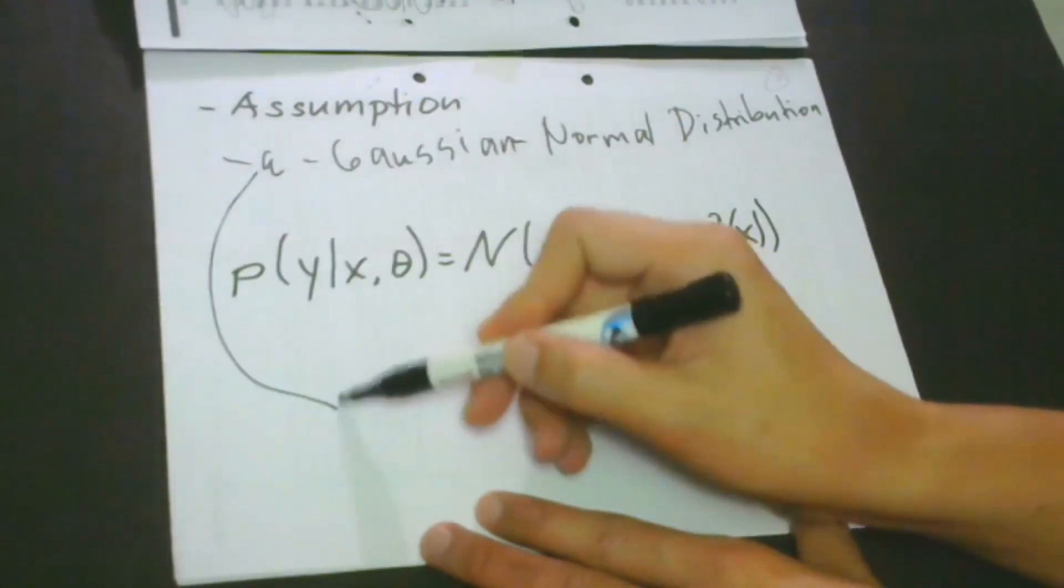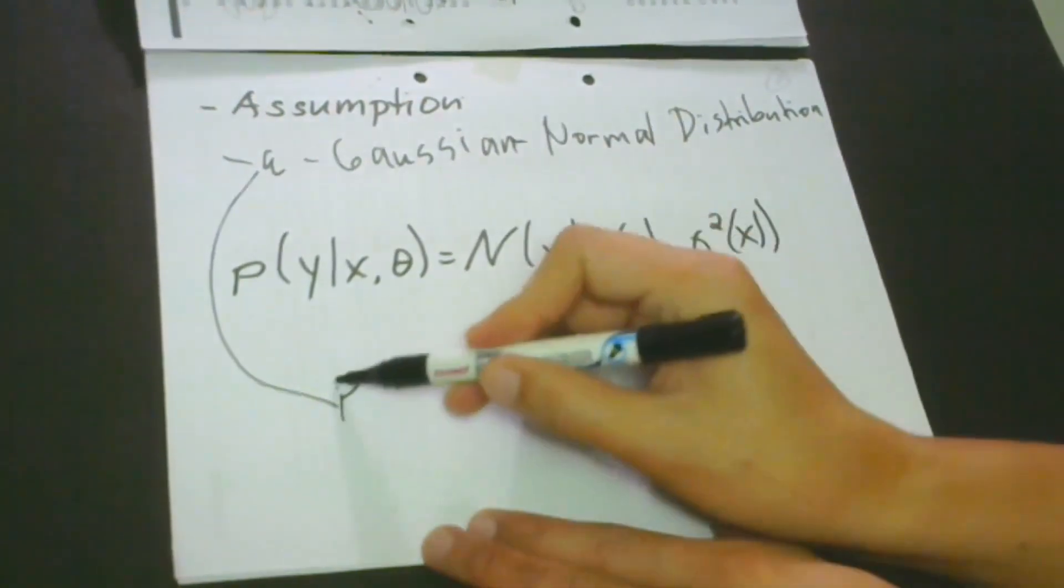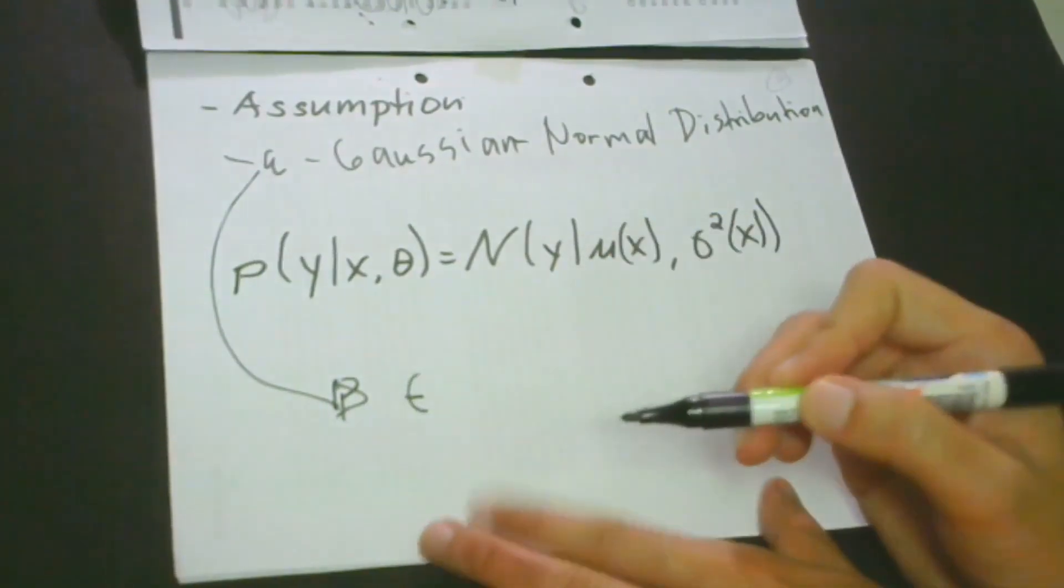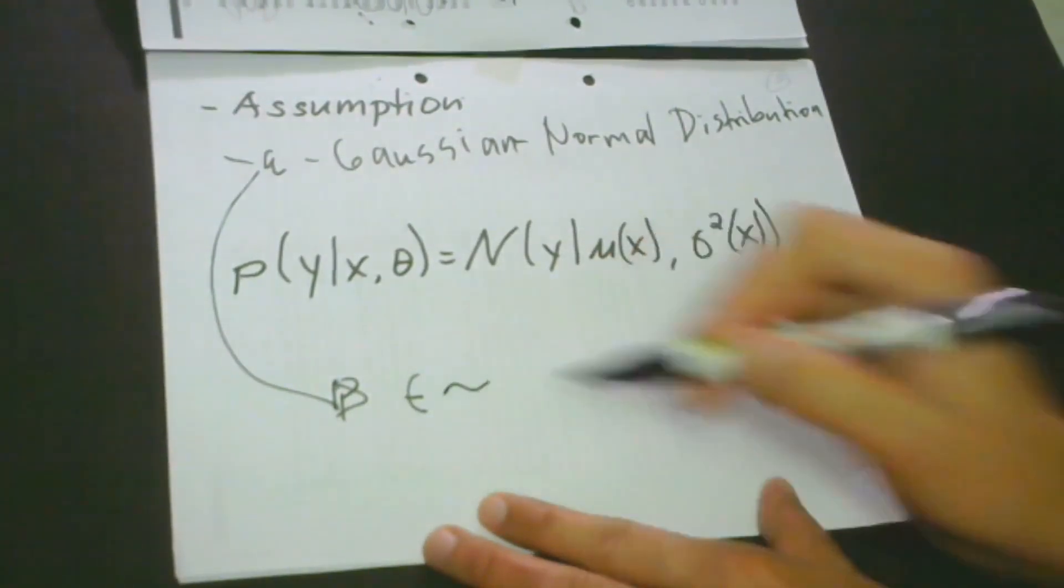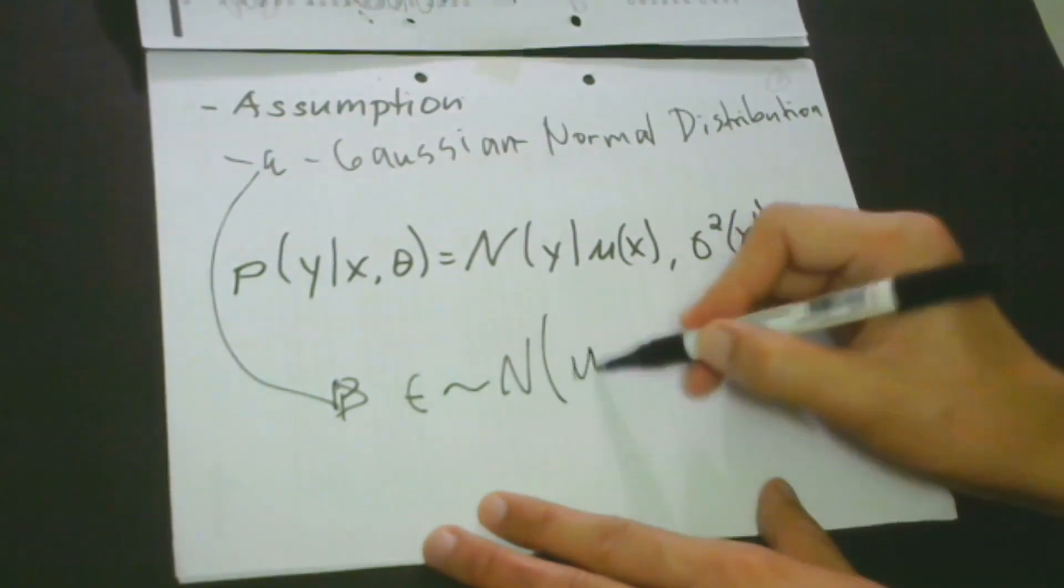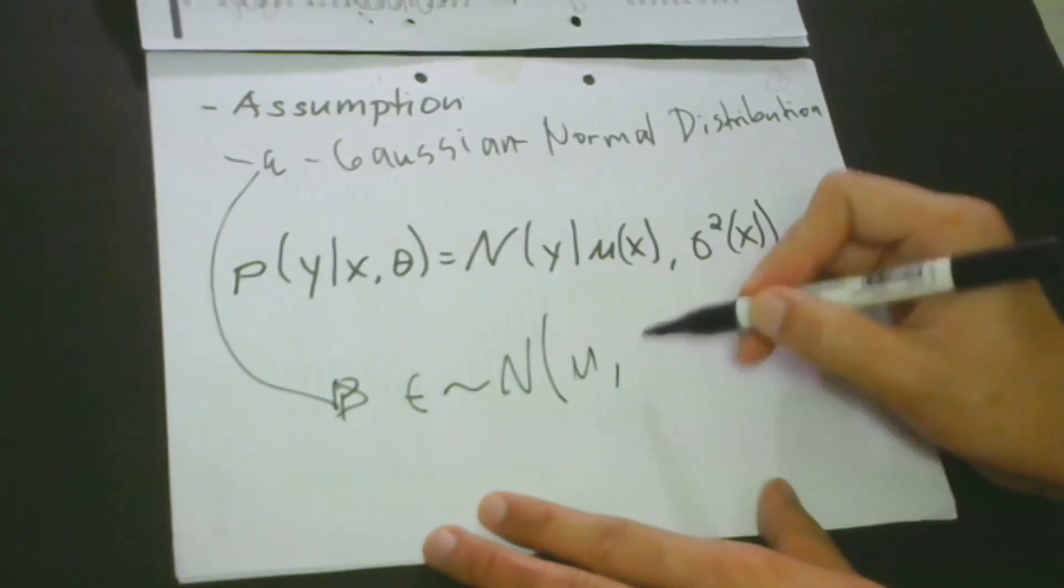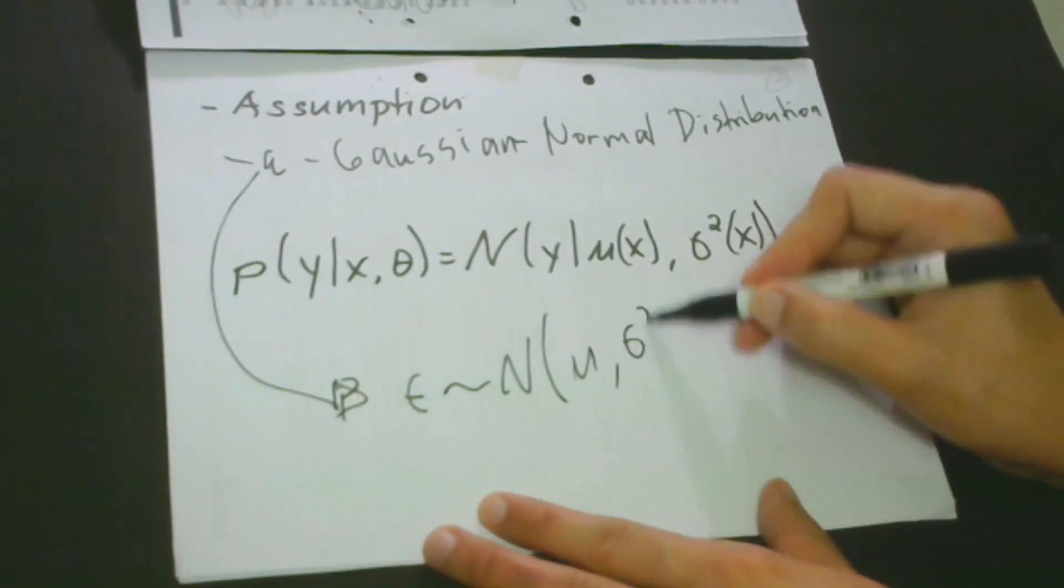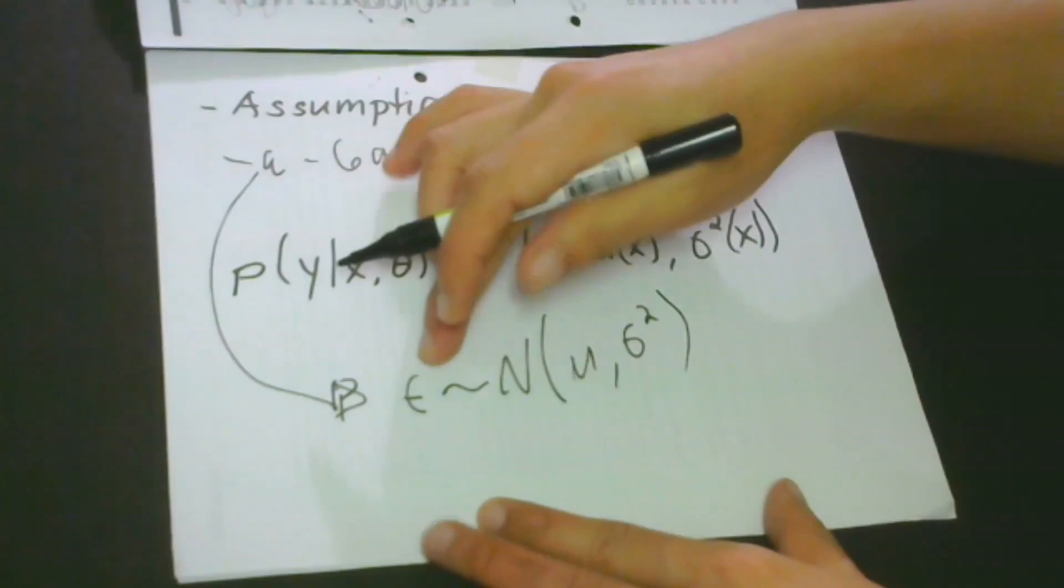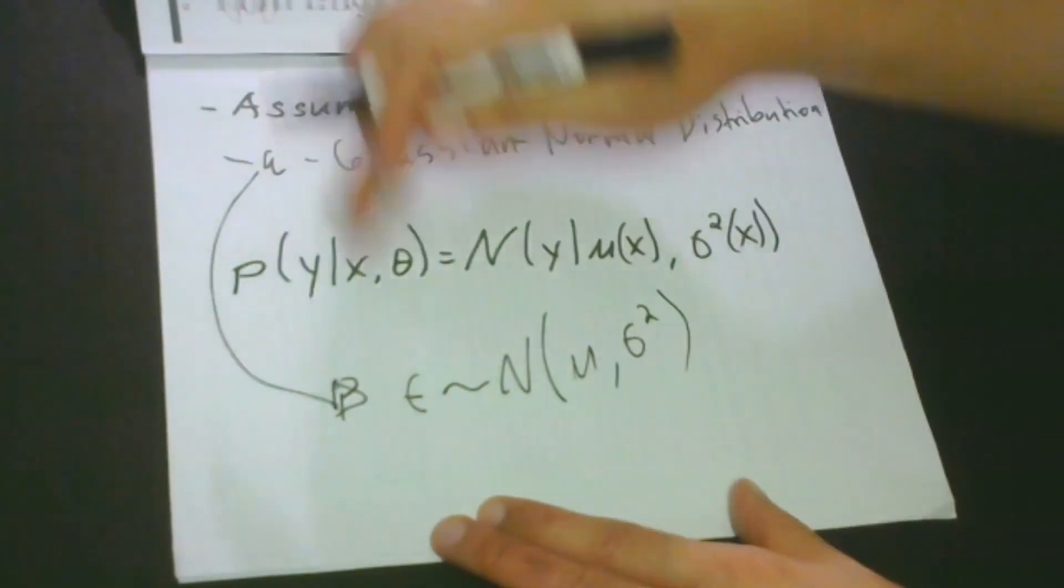So this error is actually denoted by, let me write here so that you can properly see. And if this is your first time to meet this notation, then you will have an idea. And if you already had this before, then you will be reminded. So this error is denoted by this,